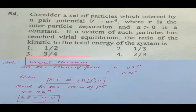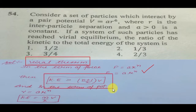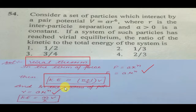In the virial theorem, if you have a force like f = ar^n, then your kinetic energy becomes (n+1)/2 times the potential energy. And in terms of potential, if you have a potential like v = ar^n, your kinetic energy becomes n/2 times the potential energy. This is your virial theorem.